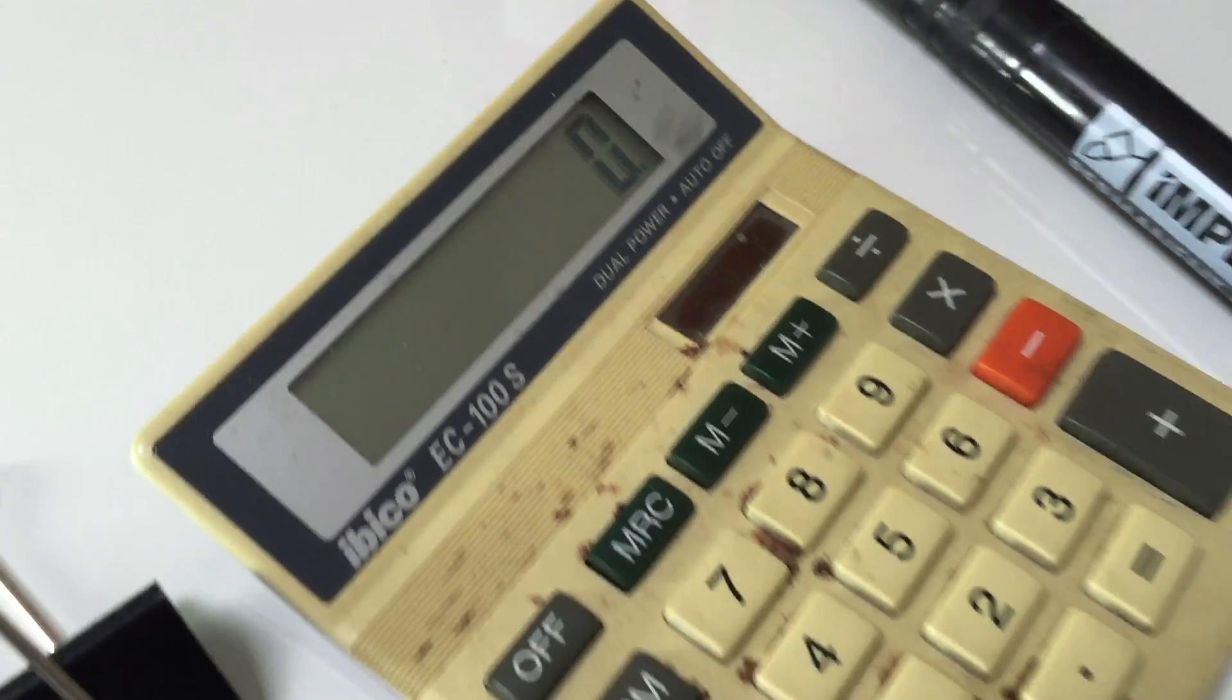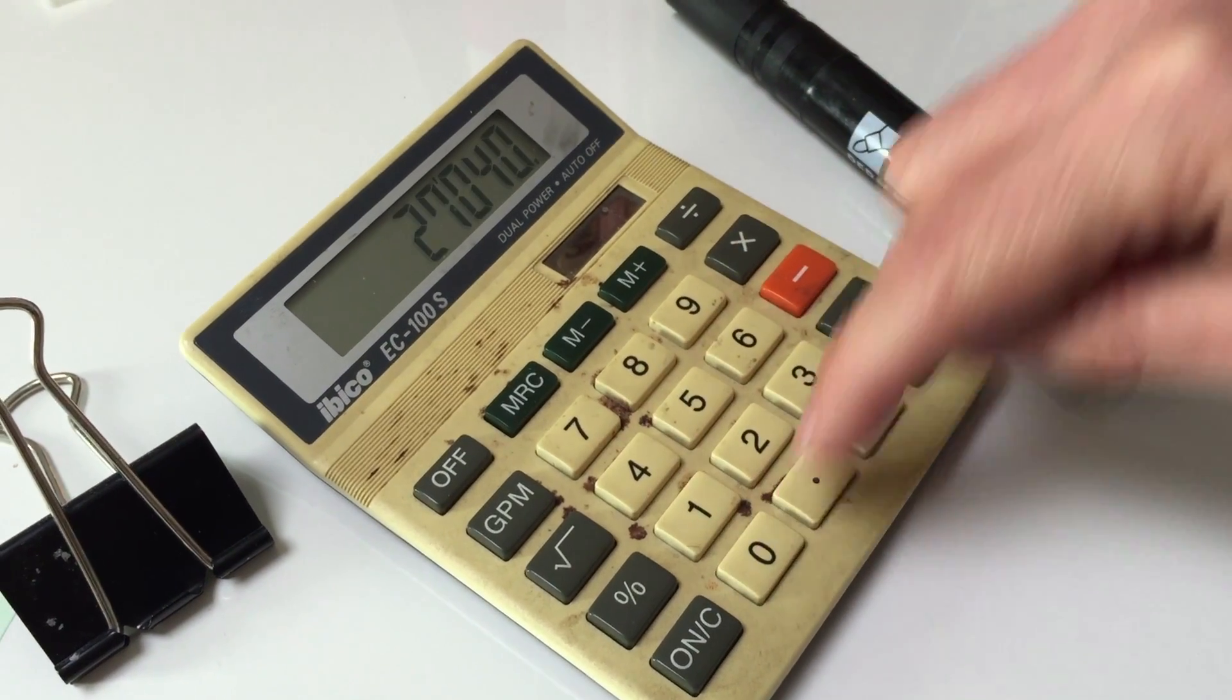The Tesla Model 3 in the States is $35,000. That equates to about £27,000 here in the UK including tax.